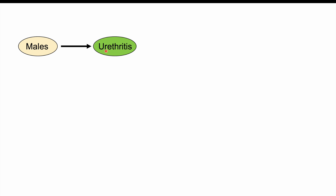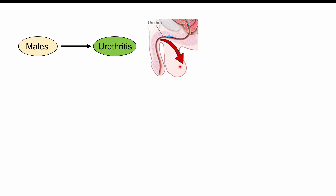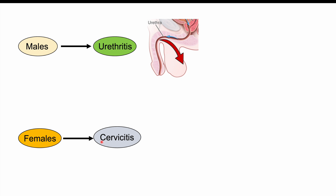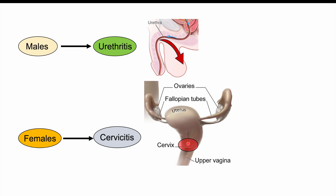In males, infection leads to urethritis — inflammation of the urethra — and in some cases organisms can invade the epididymis and testes. In females, organisms enter the cervix and cause cervicitis, specifically endocervicitis involving the inner side of the cervix.